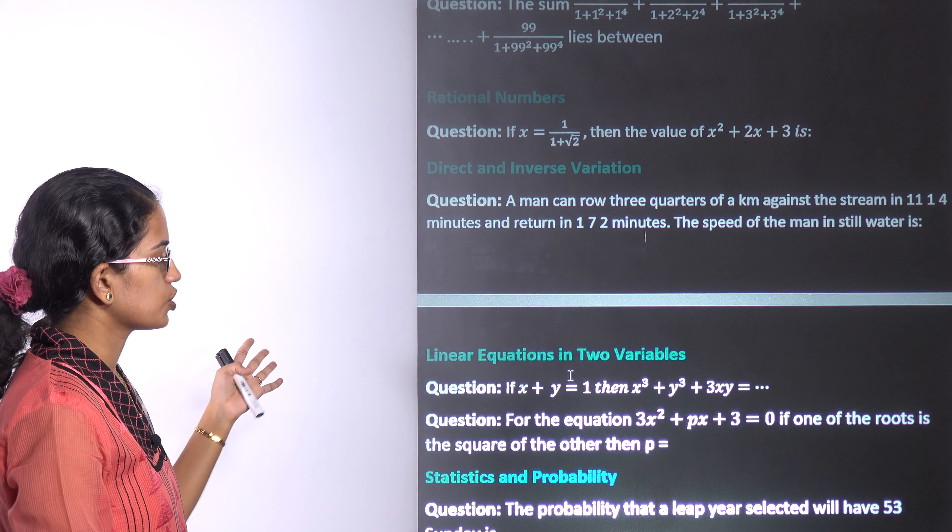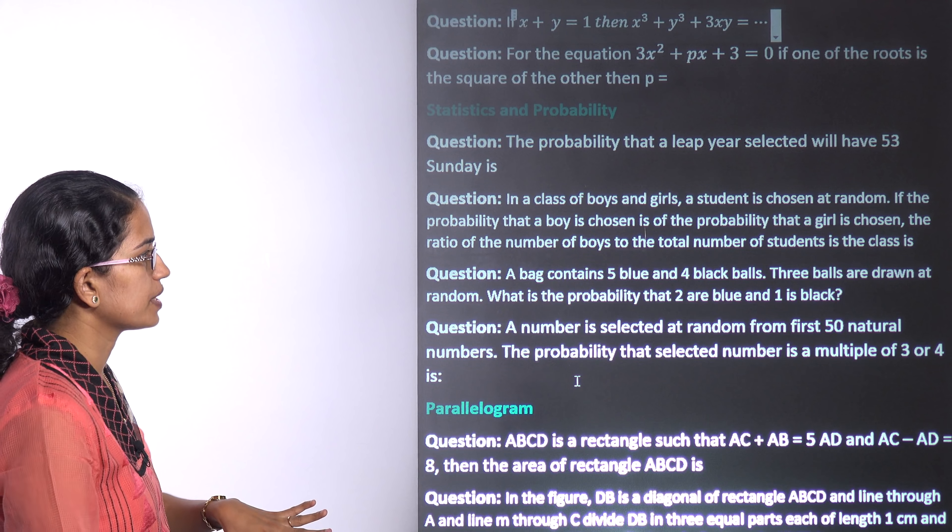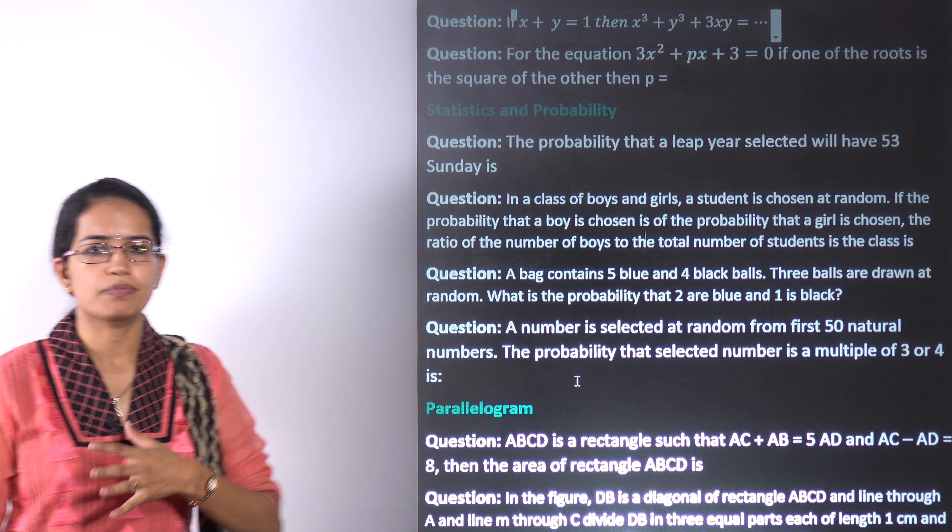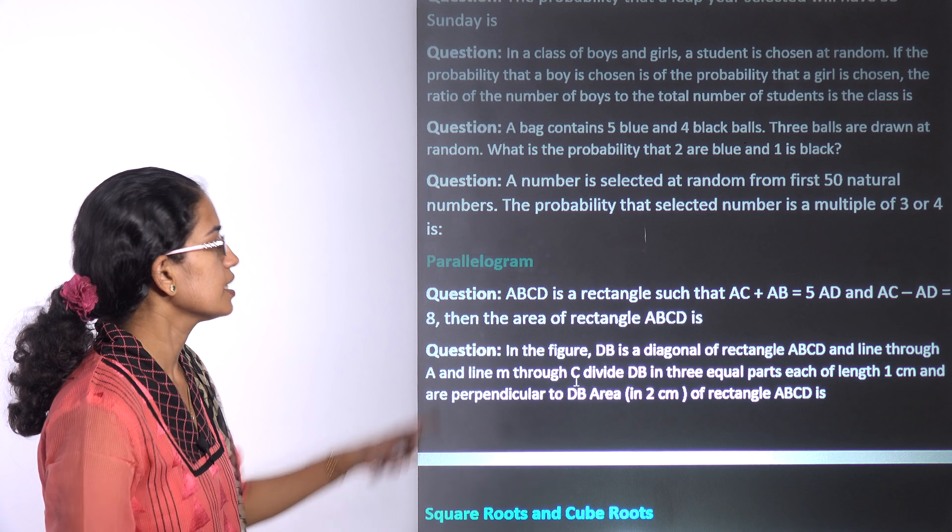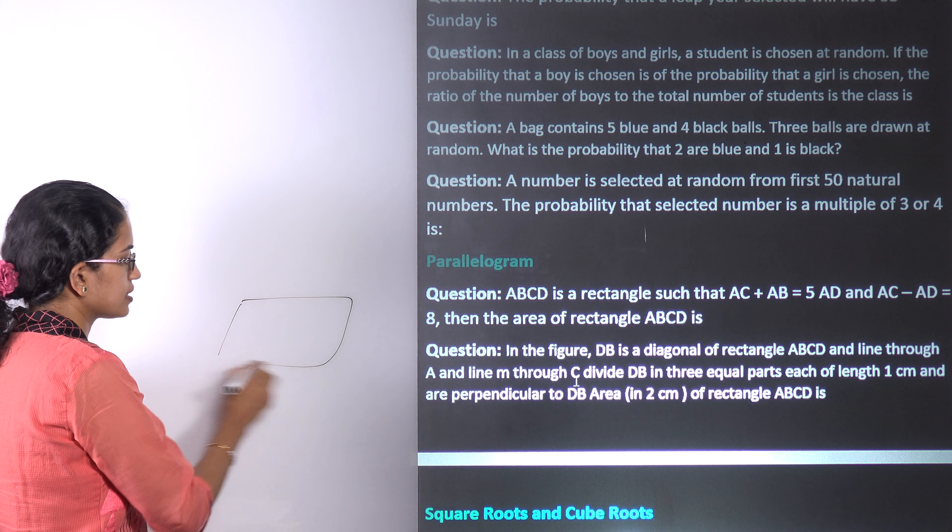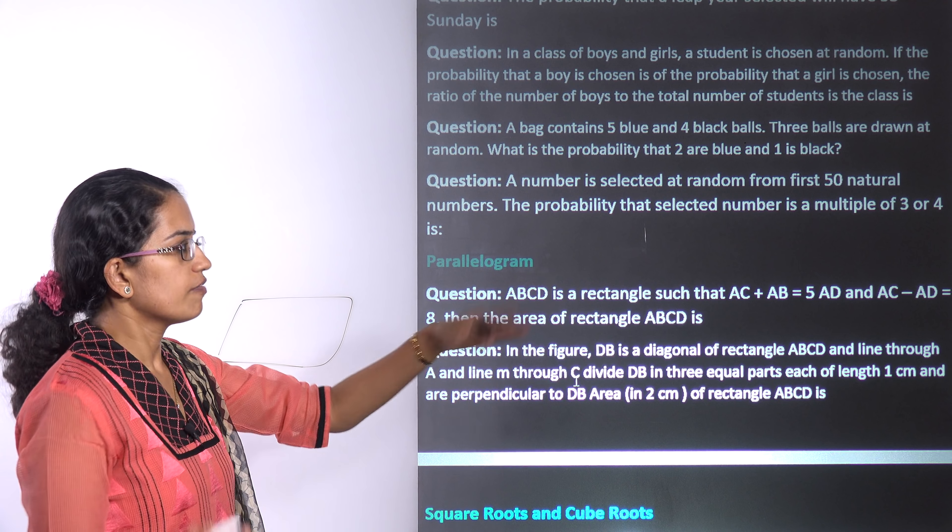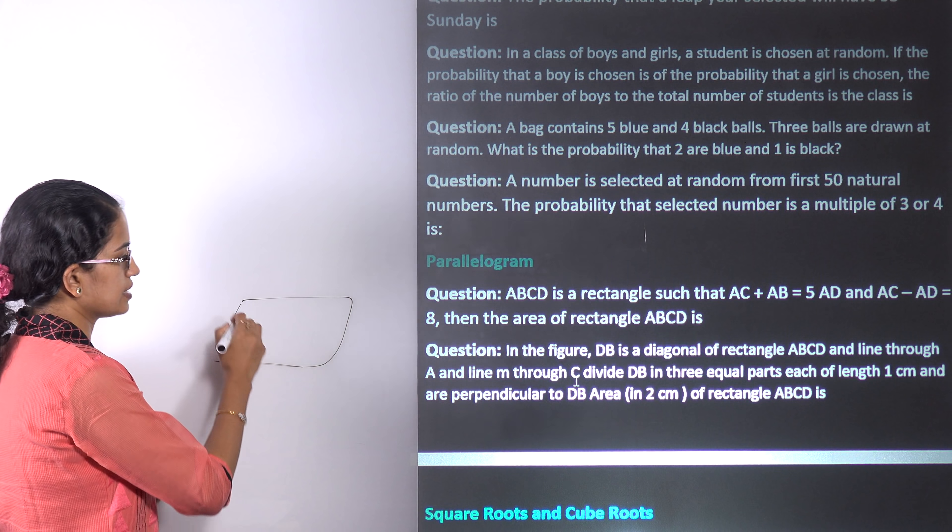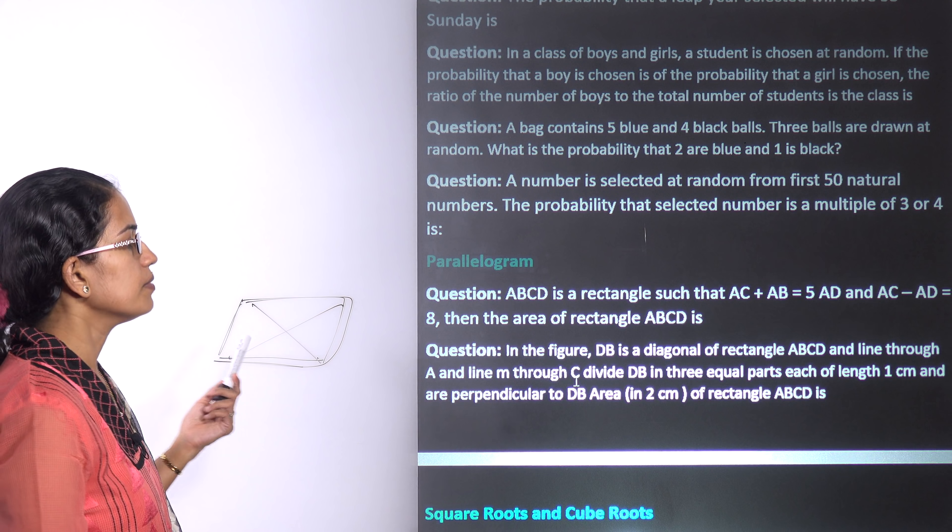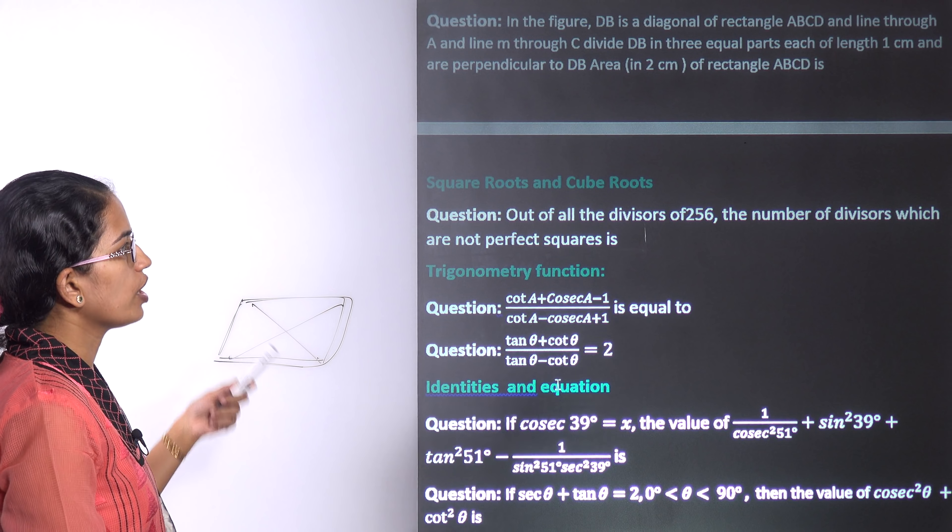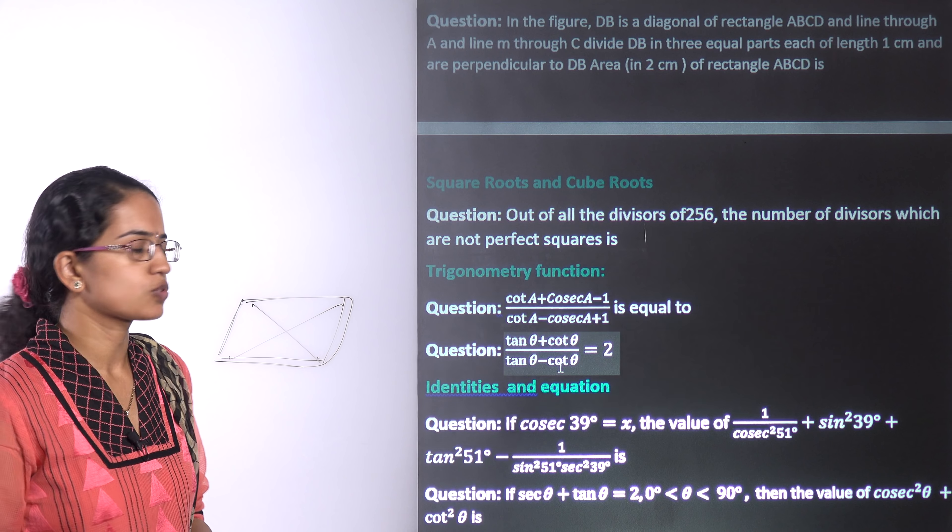The direct and inverse ratio, working around with unity problems is important. Statistics and probability is a common section. A bag has five blue balls, four black balls, you randomly pick out two balls, what is the probability the ball would be red or black would be a common question. Parallelogram, you are asked to calculate the areas. You have class 10th geometry that's very important. You have AC plus AB is 5AD and then you have the other equation given. The various dimensions are given and you're asked to find the area of the rectangle or parallelogram. For square roots and cube roots, you need to know the perfect squares and perfect cubes and that would go well with the cube roots and square roots as well.